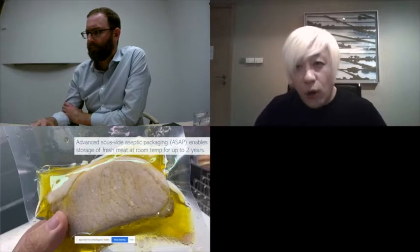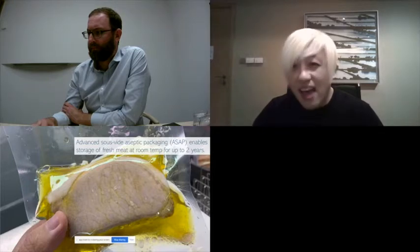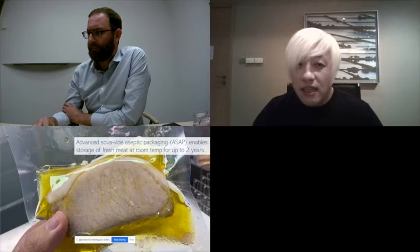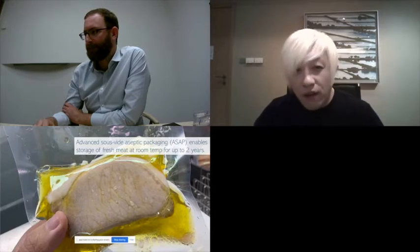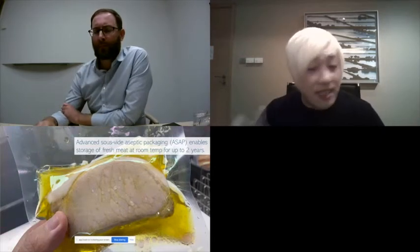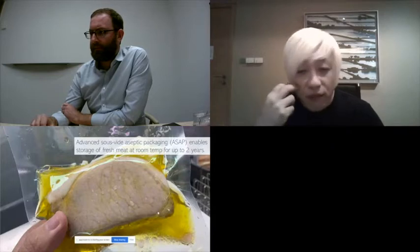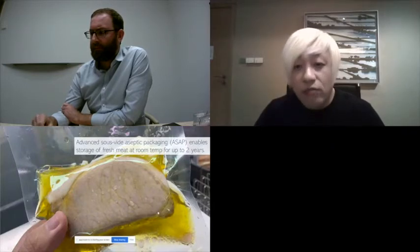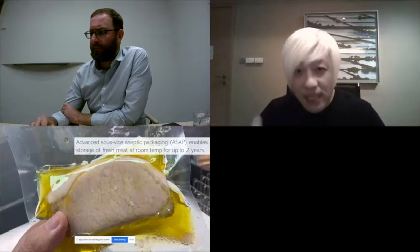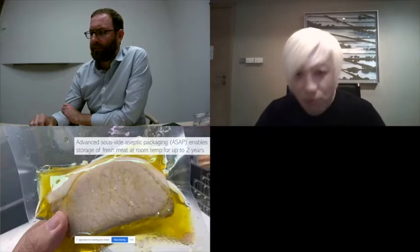We developed a technology called ASAP, advanced sous vide aseptic packaging. The technology enables the storage of fresh meats at room temperature for up to two years. The yellow liquids you see is extra virgin olive oil. After we package it, you can store this meat in your cupboard and it will last for a long time. Our technology sterilized the meat at 60 degrees.